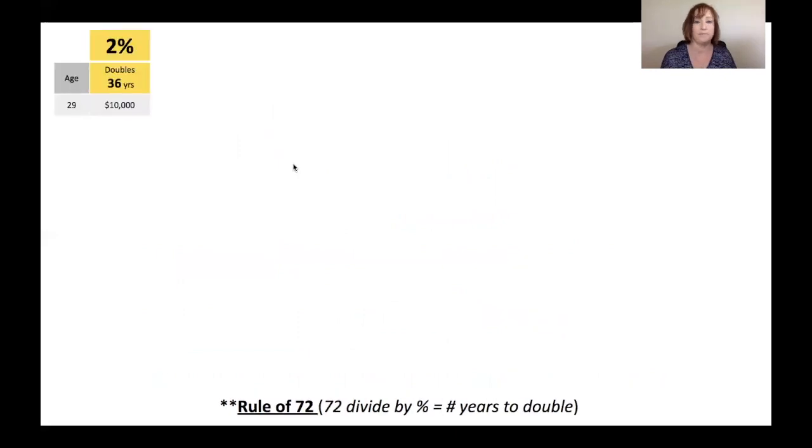So I'm going to start with a 29-year-old with $10,000. Money doubles at 2%, money doubles every 36 years. So if they have $10,000 by age 29 at 36 years, by age 65, they've got one doubling. They have $20,000.